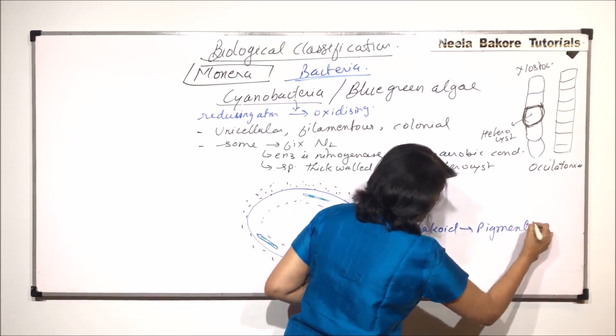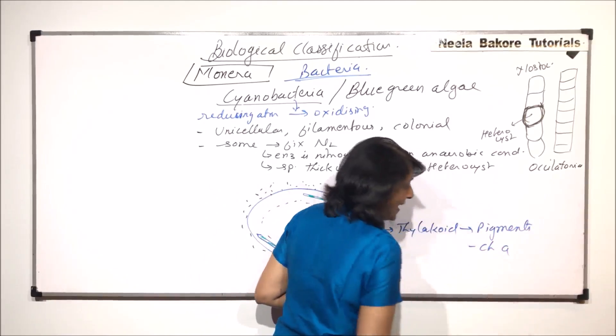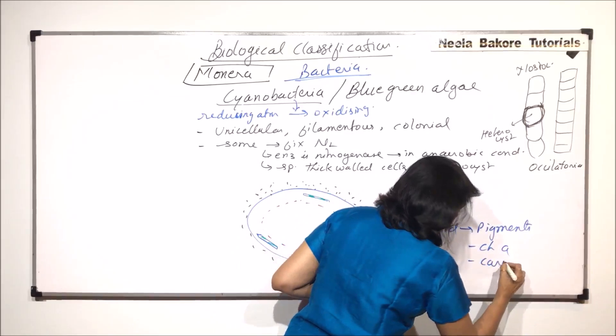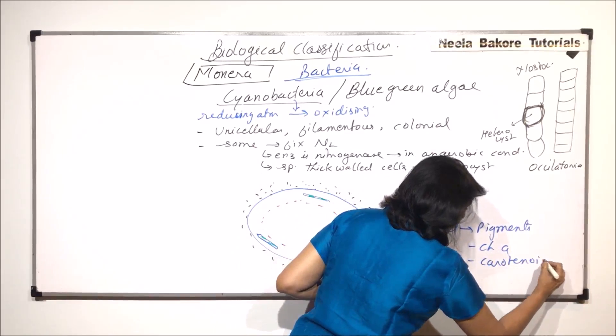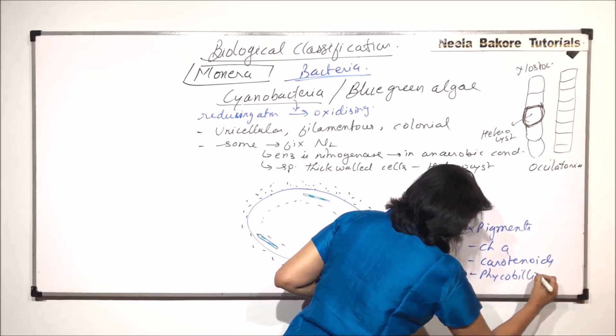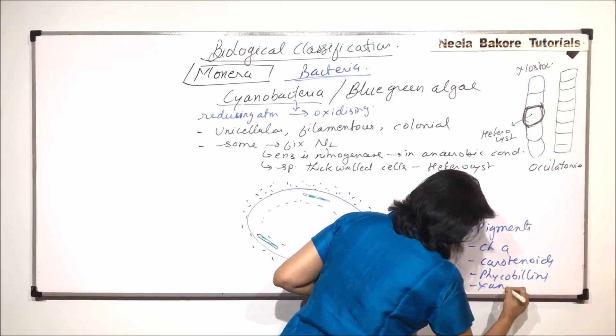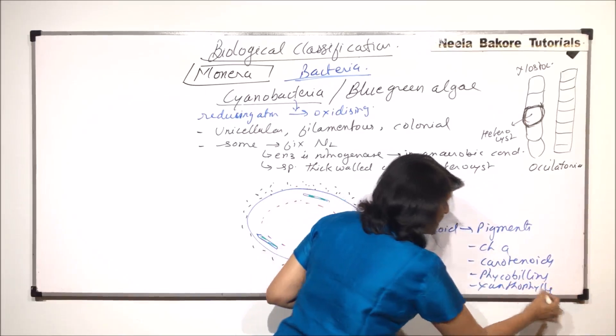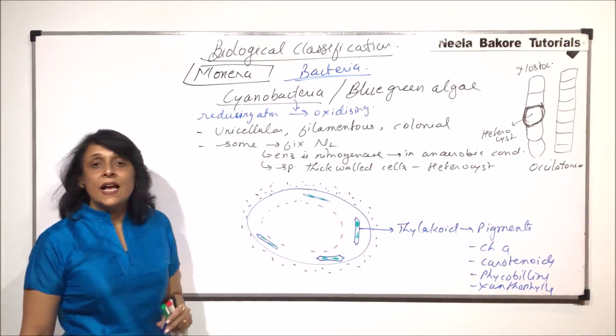The pigments found are chlorophyll A, chlorophyll B is absent. So chlorophyll A is there, carotenoids, phycobilins, xanthophyll. These pigments are present in case of this cyanobacteria.